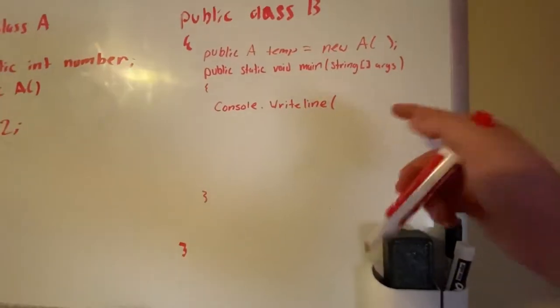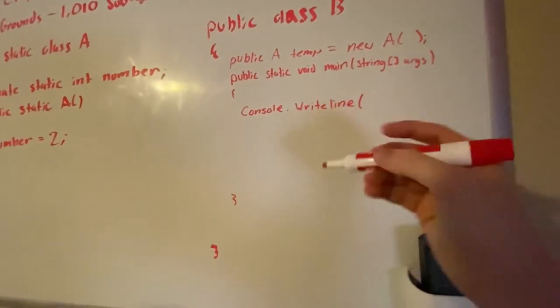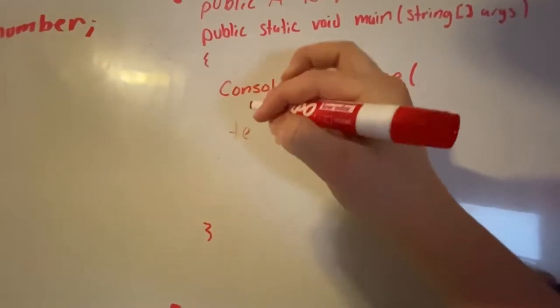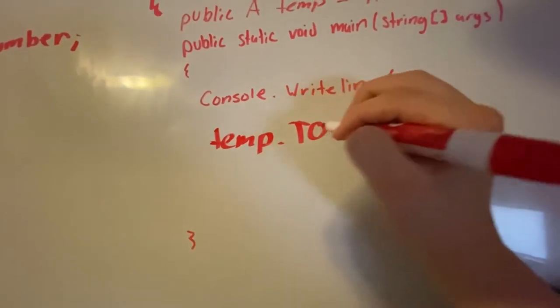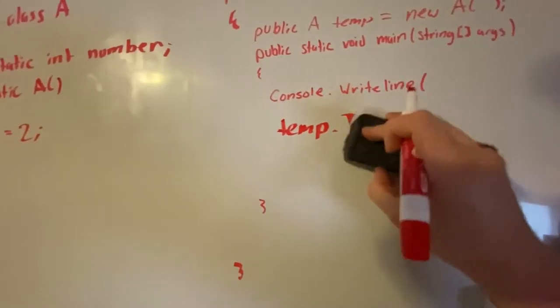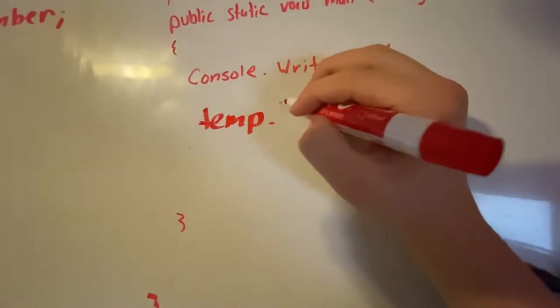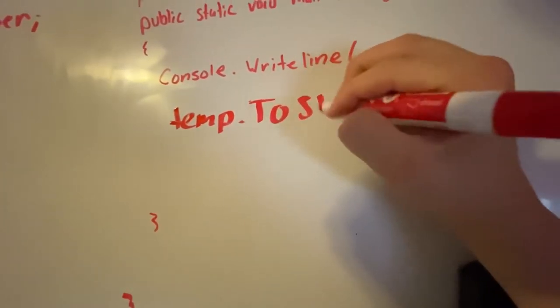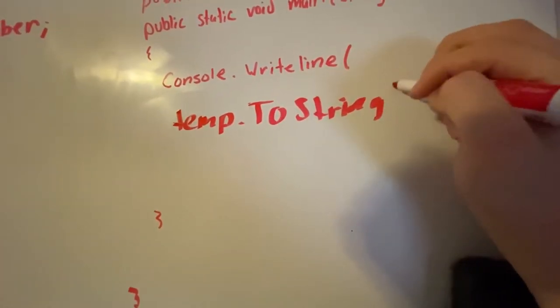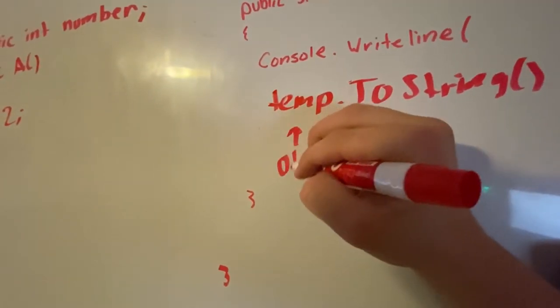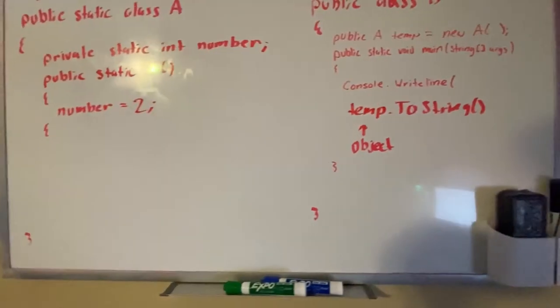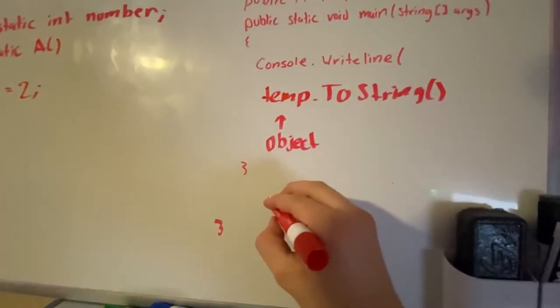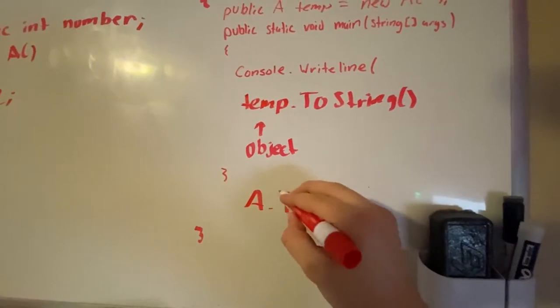Now the reason why is because when we do ToString here, we're doing temp dot ToString with a lowercase. We're doing temp.ToString, so basically this is an object, right?